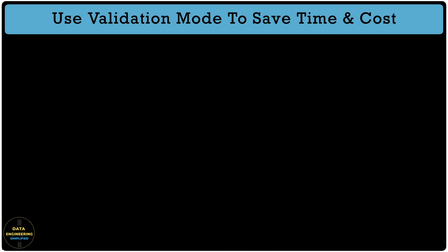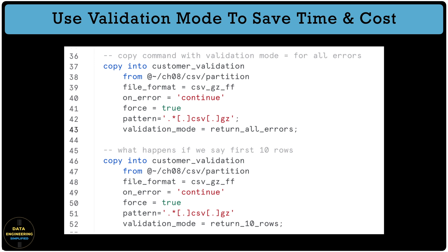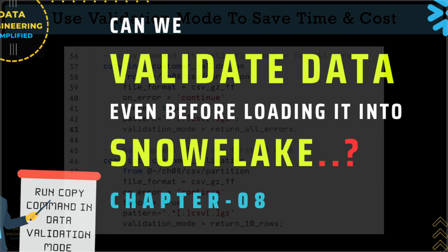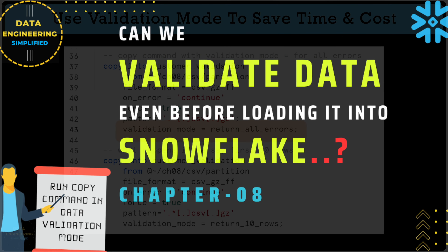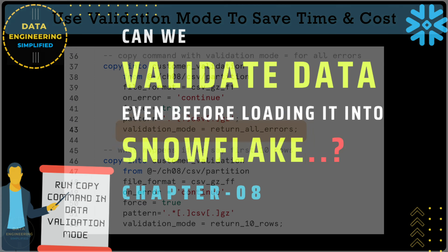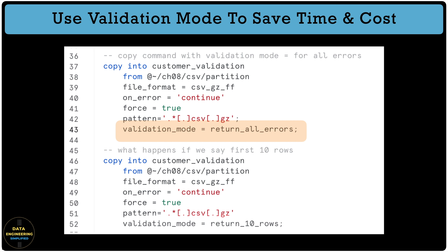The next best practice is the use of validation mode while running the COPY command before loading large datasets. We had a dedicated chapter around it and learned the power of validation mode — how it saves tons of development time and debugging effort. When you have a large dataset, especially in compressed format, it is better to use validation mode to bring development efficiencies. This not only saves time but also a lot of warehouse compute credits.